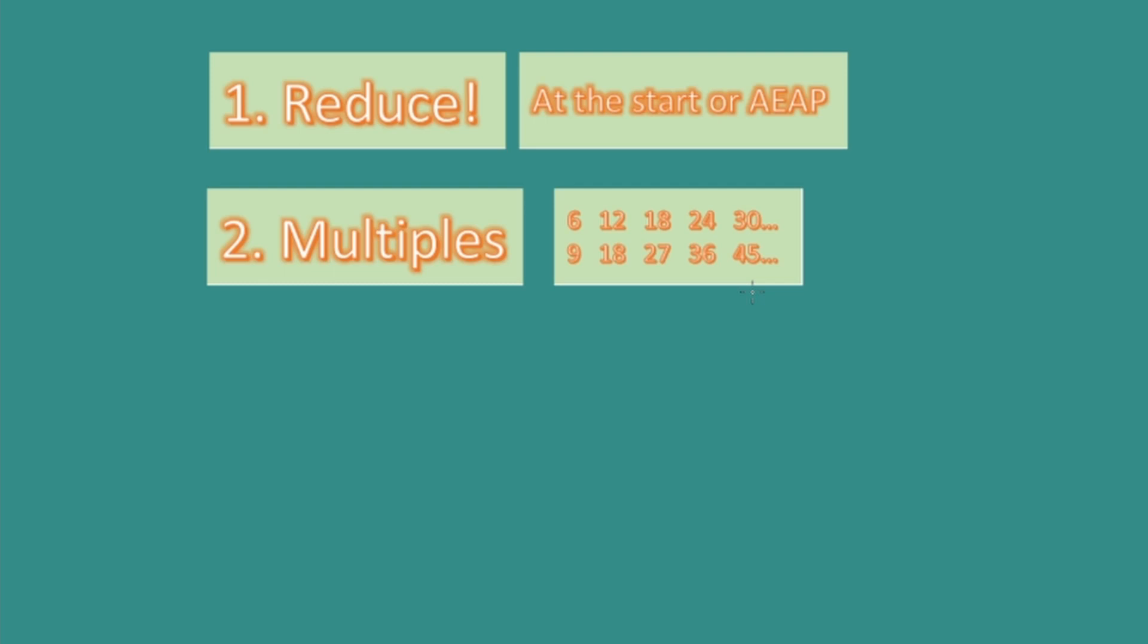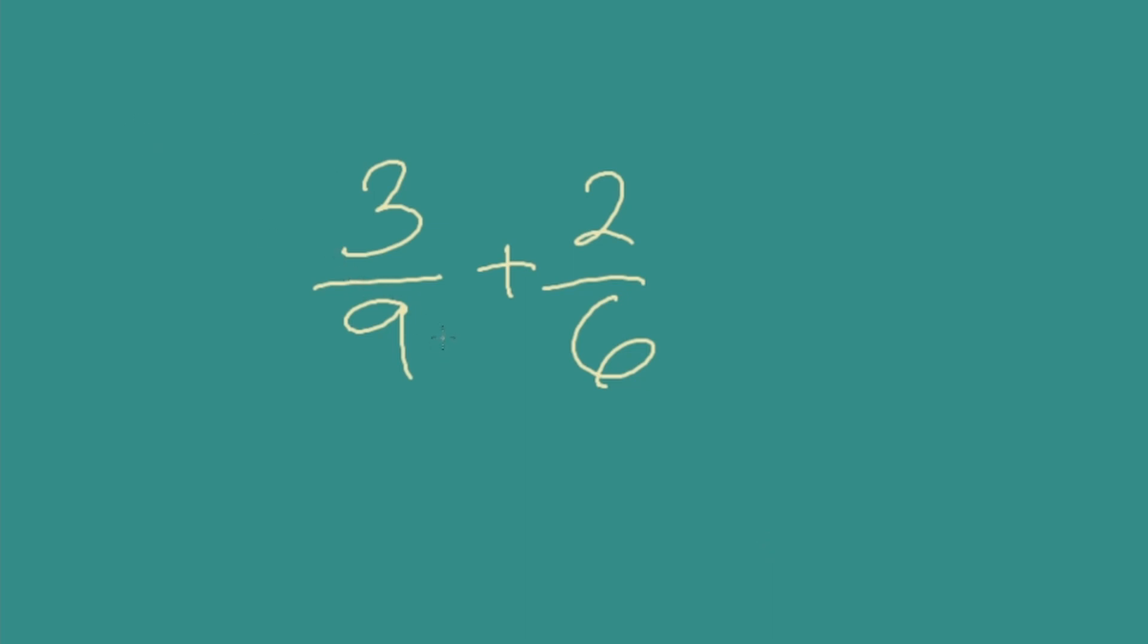But here's key number three. Multiply the denominators to find a common denominator. If we multiply our denominators, in this case 9 and 6, we will find a number that they both fit into. That makes sense. We multiply those to create a larger number and they both multiply into it. In this case we would have a new denominator of 54.